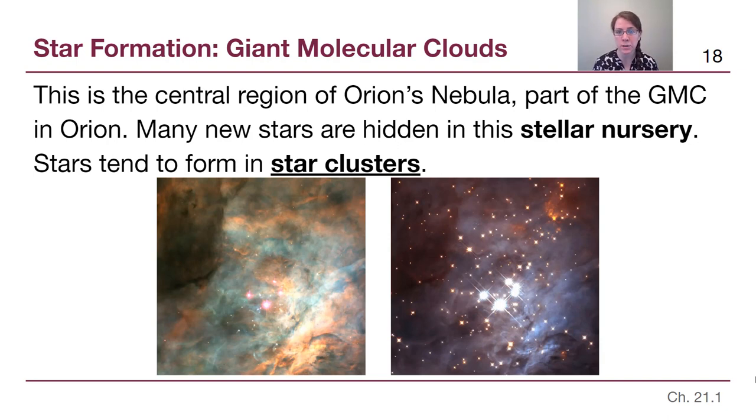When we zoom in on it, on the left we have visible and near infrared, and on the right we have far infrared light. We can actually see little stars cocooned within this nebula, where on the left they have that weird reddish color that's part of interstellar reddening, and on the right we are looking at wavelengths that allow us to see those stars behind the gas and dust. And we see that there are a whole lot of stars here, and they are forming all together in a star cluster.